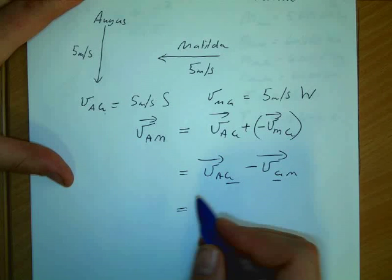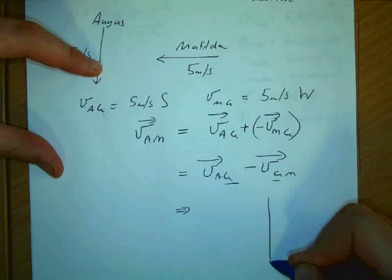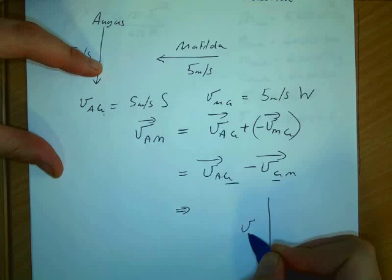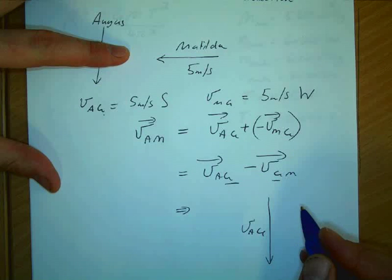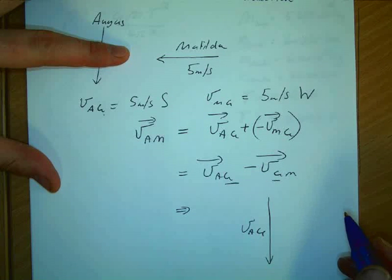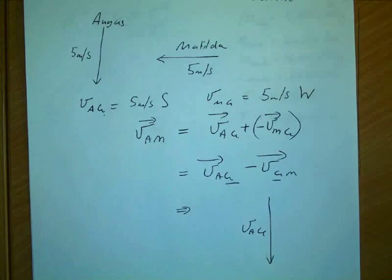And now we need to just draw a diagram. So VAG is this one. That's VAG. And minus VGM. We'll take VMG and flip it around. Is that right? Yeah. That's what I want.